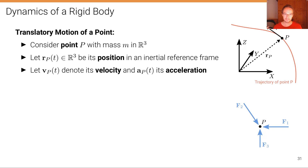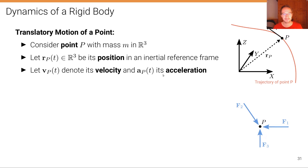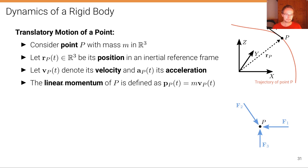Let's first look at a single 3D point with mass m in 3D space and look at the translatory motion of that point. Let r denote the location of that 3D point, let vp at time t denote its velocity, and ap at time t its acceleration. The linear momentum of p is defined as pp at time t equals the mass of that point times the velocity at time t.